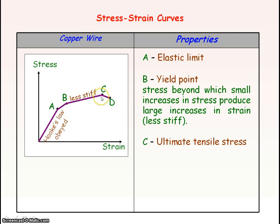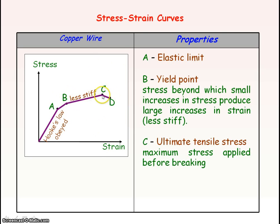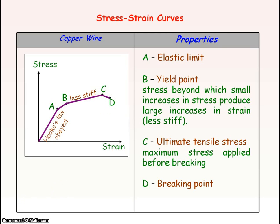Point C is the ultimate tensile stress — the maximum stress you can apply before the material breaks, and an indicator of its strength. For copper, the material does not break at C; if you apply a stress slightly less than the ultimate tensile stress, the material will break at point D, the breaking stress. For most materials, C and D are the same. Because copper has a large plastic region and can be drawn into a wire, it is a ductile material.